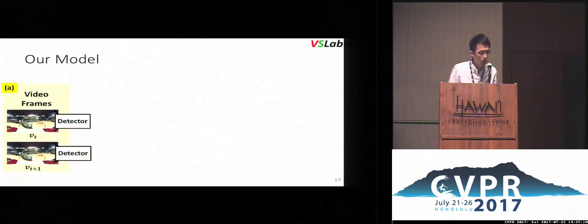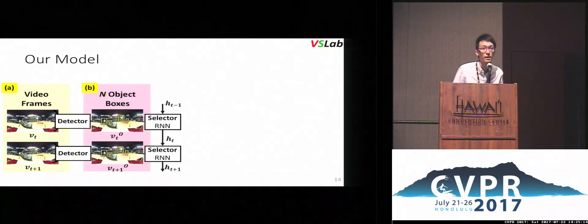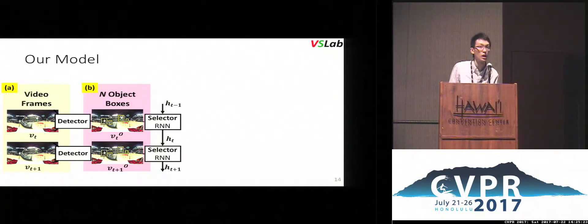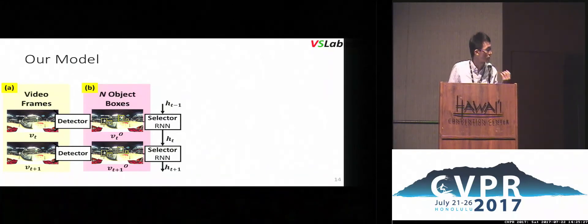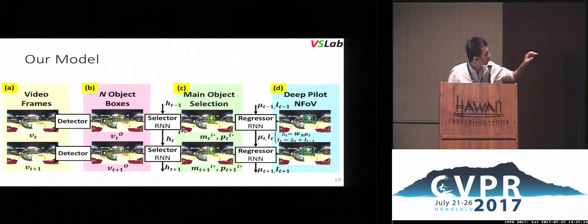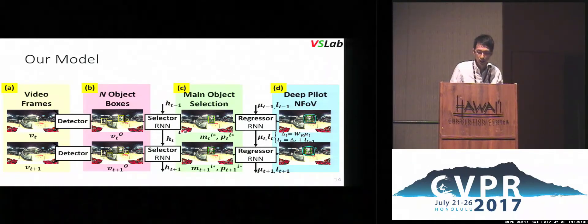Here is our model. We use an off-shelf detector to extract object candidates, and we use two RNNs to aggregate information from past frames to the current frame. Our method is an online algorithm, so we can use it in online streaming videos. We use these RNNs to steer the normal field of view to cover the main objects at each frame, and we can aggregate smooth and accurate trajectories.